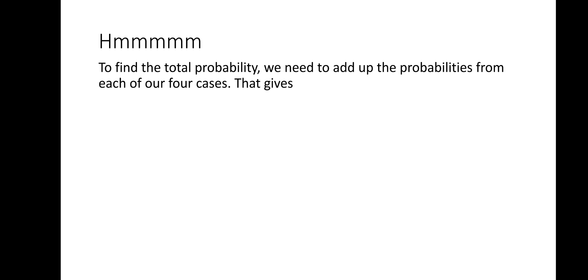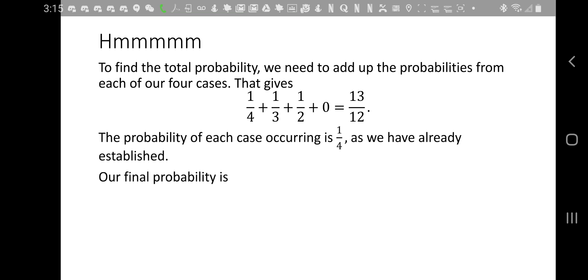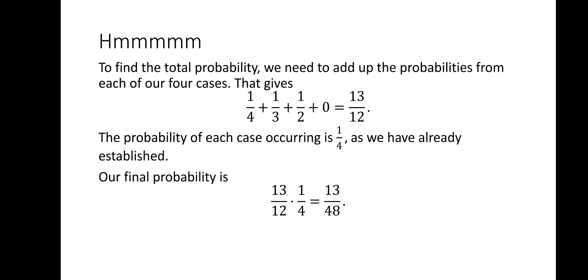So now we need to add all our probabilities from each of the cases to find the total probability. That yields 13/12, but then we have to multiply by 1 over 4 because that's the probability of each case occurring. So our final probability is 13 over 48, and that is our answer. We are done.